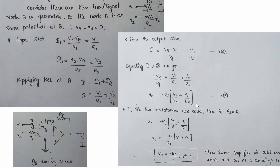Considering the case where R1 = R2 = R (input resistances are equal but Rf is different): substituting into the general equation, R is taken as a common factor, giving Vo = −(Rf / R) × (V1 + V2). If all resistances are equal — R1 = R2 = Rf = R — then Rf/R = 1, and Vo = −(V1 + V2).